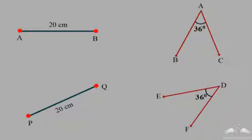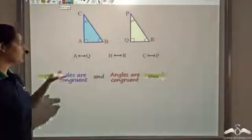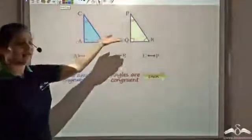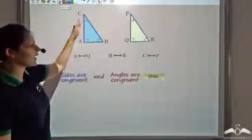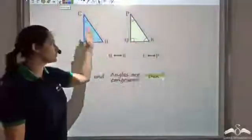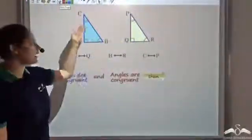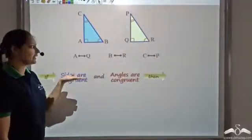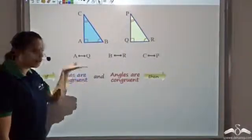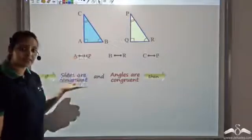We have seen when lines are congruent and when angles are congruent. Now let's see when triangles would be congruent. A triangle has nothing but lines and angles — three lines or three sides and three angles. The lines are the sides in the case of a triangle.